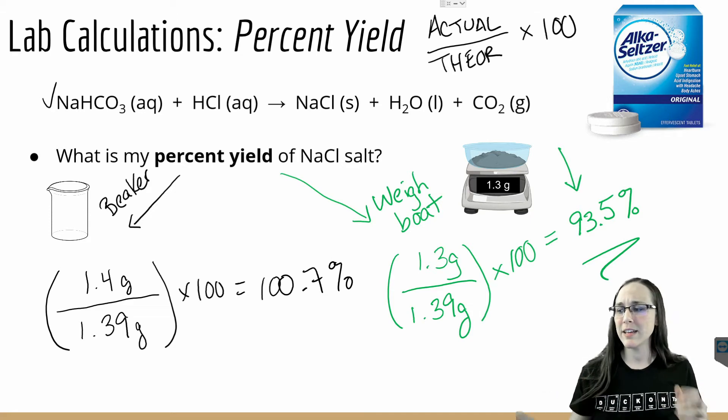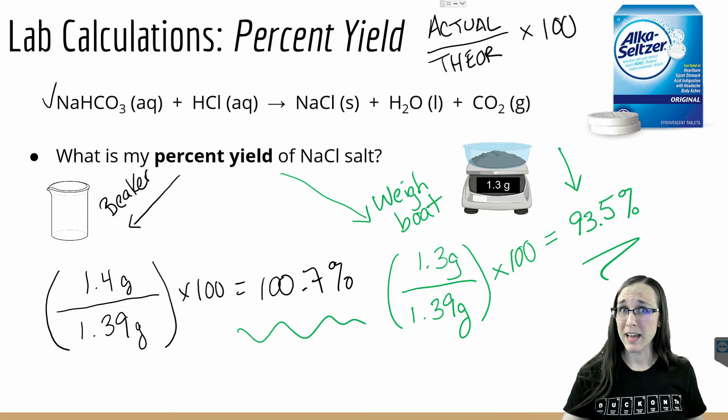But what happens if your percent yield ends up being over 100 percent? Is it possible to yield more than 100 percent of what I could theoretically maximally make? No, of course not. It wouldn't be possible to yield more than 100 percent.